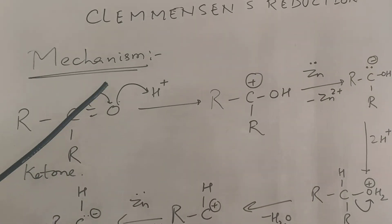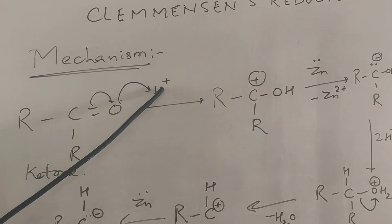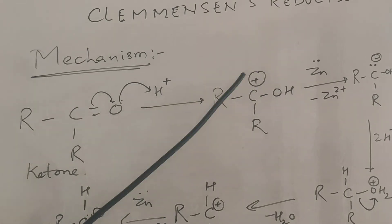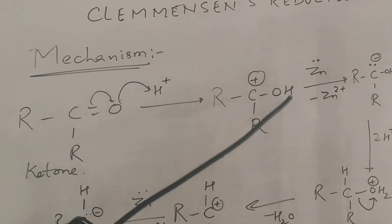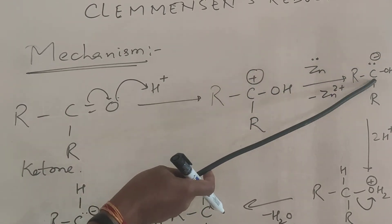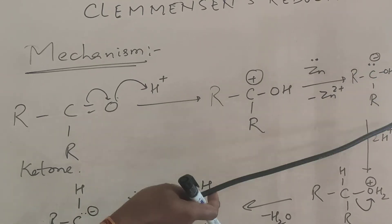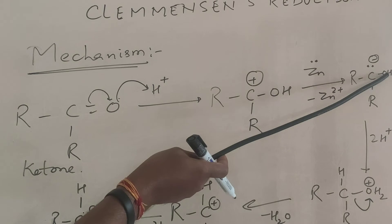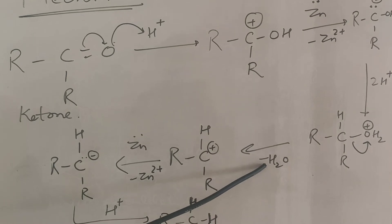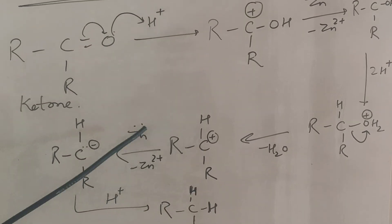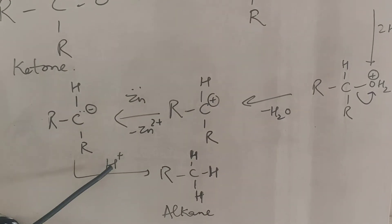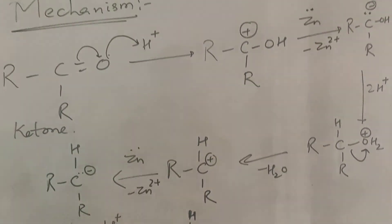To repeat the mechanism: considering a ketone, the electron shifts and oxygen binds with a proton, forming a carbocation with an OH group. Zinc donates electrons to this positively charged carbon; it becomes a negatively charged carbon and takes up a proton to form the alkane. That is the mechanism of Clemmensen reduction.